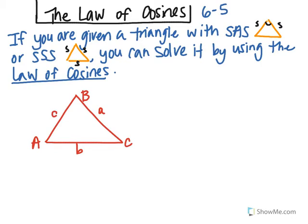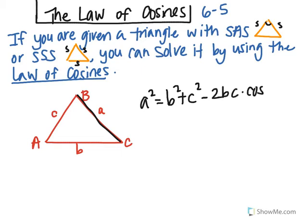Here's basically how the theorem works. If you have side a squared, that equals the other two sides squared — b squared plus c squared. It kind of looks like the Pythagorean theorem right now. And then what you're going to do is subtract off those same two sides but twice them: twice sides b and c times cosine of angle A. So if you are finding side length a, you're going to use angle A, the one opposite, and plug the other two sides squared into the formula.